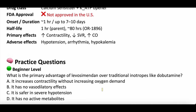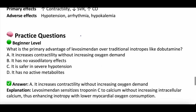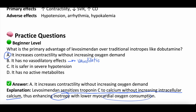Beginner level question: What is the primary advantage of levosimendan over traditional inotropes like dobutamine? A) It increases contractility without increasing oxygen demand. B) It has no vasodilatory effects. C) It is safer in severe hypotension. D) It has no active metabolites. The answer is A — it increases contractility without increasing oxygen demand. Levosimendan sensitizes troponin C to calcium without increasing intracellular calcium amounts, thus increasing inotropy without increasing myocardial oxygen demand. The other options are false: it does cause vasodilation, it is not safe in severe hypotension, and its active metabolite lasts 7 to 10 days.